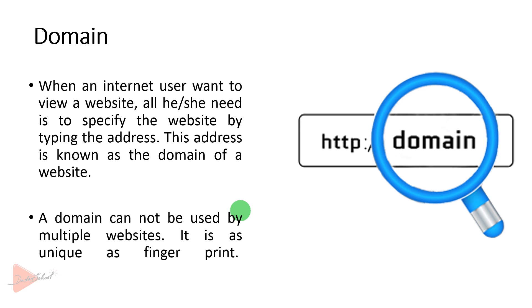For example, we have google.com. A small variation would be google-bd.com, which may already be purchased. We could go to google12345.com, or use different extensions like .net or .edu — these are slight variations of a domain name.